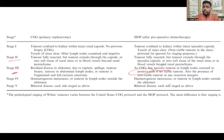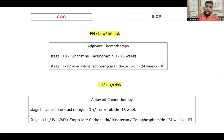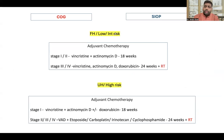Once you have the stage, adjuvant treatment is based on risk stratification, which is mainly based on histology. There are two types of adjuvant treatment: adjuvant chemotherapy and adjuvant radiotherapy — Wilms tumors are highly radiosensitive. COG risk-stratifies into favorable histology versus unfavorable histology. SIOP uses low, intermediate, and high risk. You can group favorable histology with low-intermediate risk, and unfavorable histology with high risk.